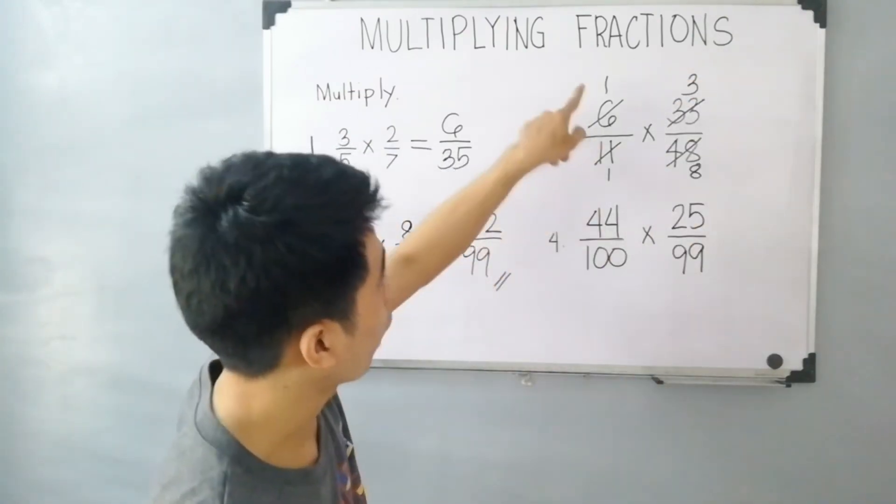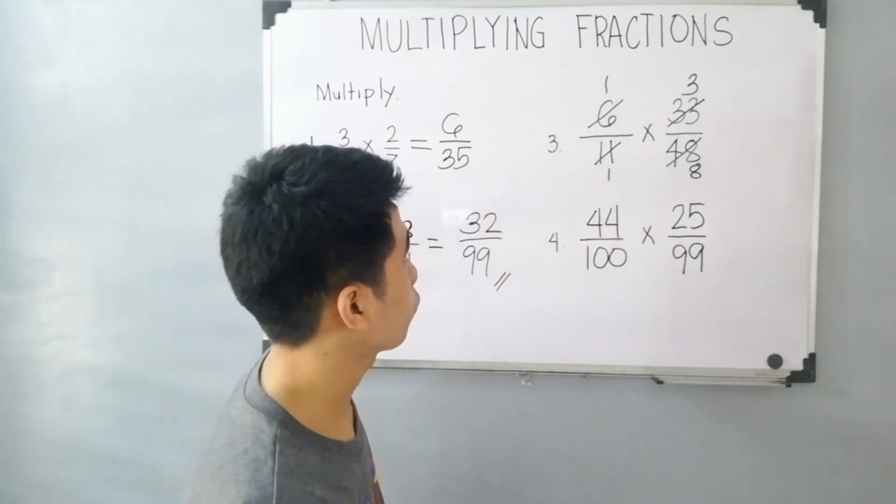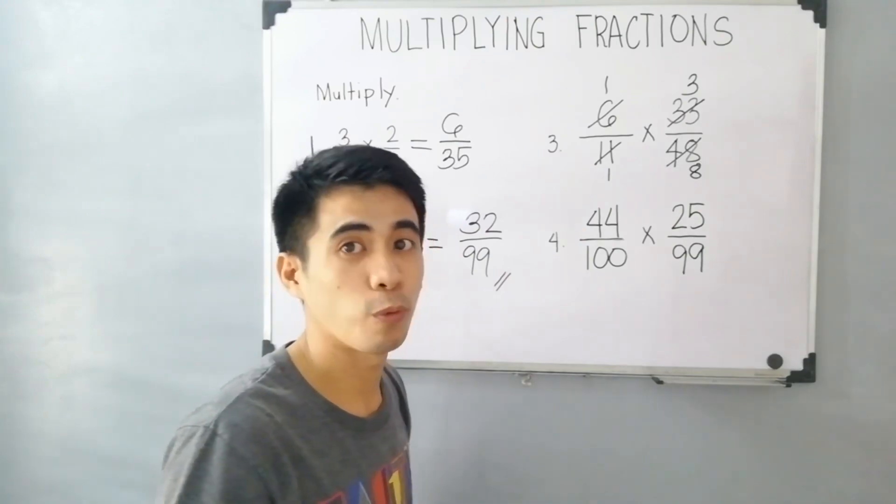Now, 1, 3, 1, and 8. No factors aside from 1. Therefore, we proceed to multiplying fractions.